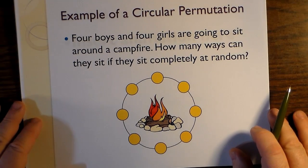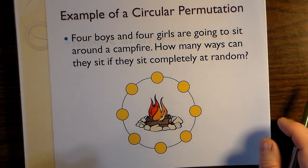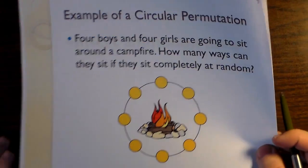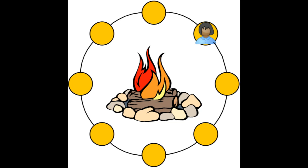Example of a circular permutation. Four boys and four girls are going to sit around a campfire. How many ways can they sit if they sit completely at random? Well, we have this idea of the first choice. It doesn't have to be a girl making the first choice because the kids are allowed to sit completely at random. So that means if any of the eight people make a first choice, that means the second person in the lineup makes a choice out of the remaining seven seats. So that gives him seven distinct choices relative to the first chooser.